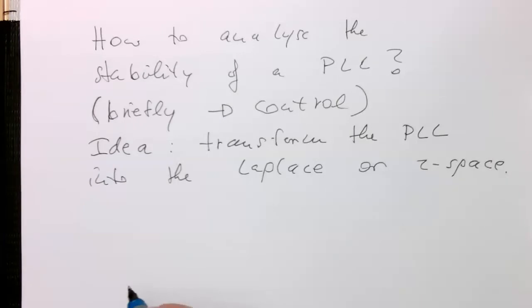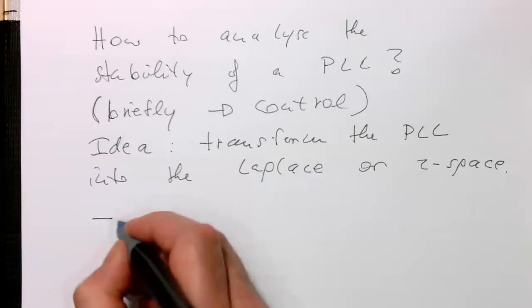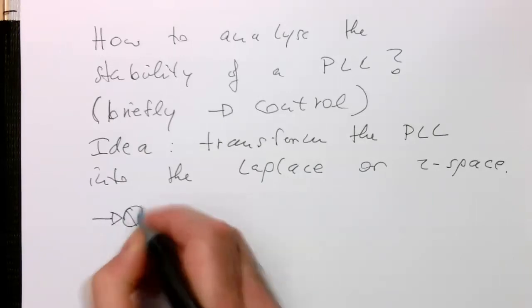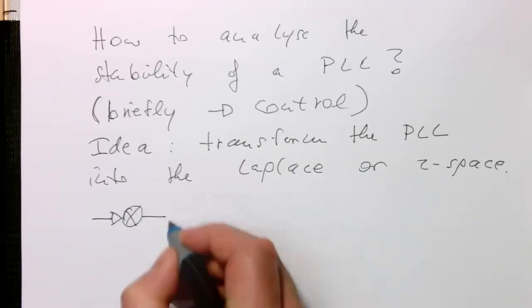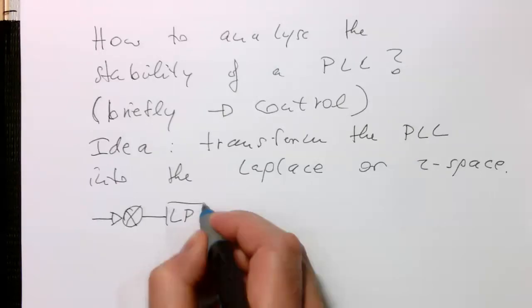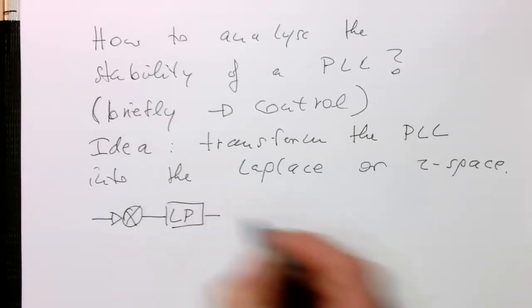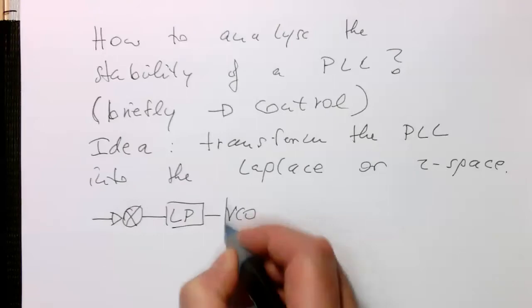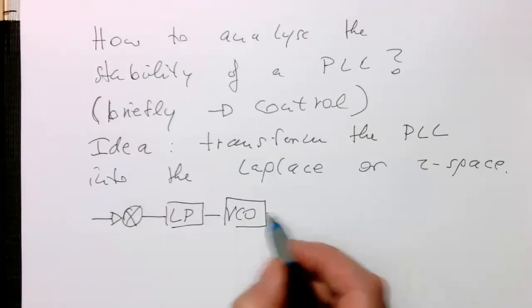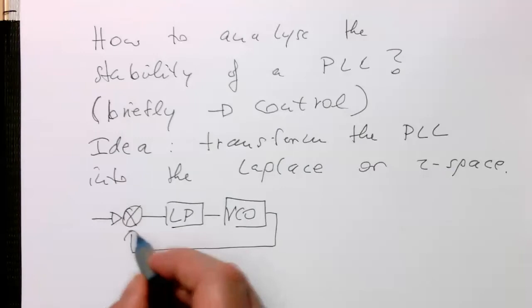So this looks then in the following way. In the time domain we had the multiplier, we had the low-pass filter, and we had the VCO. And then the VCO feeds back to that.